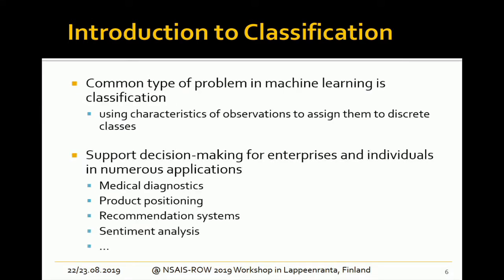We will shortly introduce classification and the decision tree, then move to results. Classification is a common type of supervised machine learning — alongside regression — concerned with assigning observations to discrete classes based on features. It has been successfully applied in many fields: medical diagnostics, credit scoring, recommendation systems, and quality control in production lines.